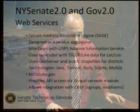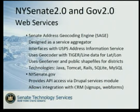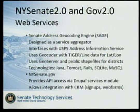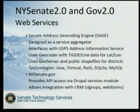Moving on to SAGE — the Senate Address Geocoding Engine. SAGE is actually a service aggregator; it takes requests and funnels them to various other services. SAGE performs three main functions. First is address correction and validation: given an address like 26 Main Street, Troy, New York 12180, we want to verify it's valid. The USPS Address Validation Service can correct addresses and at minimum add the ZIP+4 extension. This is a freely available service through the USPS.